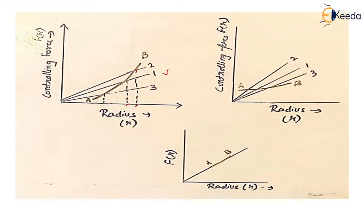Now let's take one more situation, curve number 3, where the speed is decreasing. Again, the point of intersection of speed curve and the controlling curve shows that when speed reduces, radius also reduces.